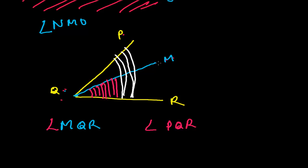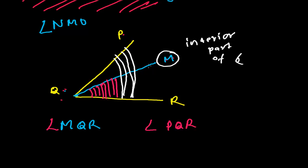You can also see that point M lies in the interior part of angle PQR. Since M is within PQR, angle MQR is smaller than angle PQR. That is how we can compare which angle is greater and which is smaller.